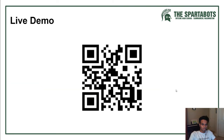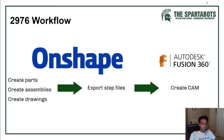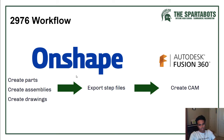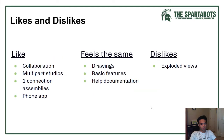Team 2976's workflow for Onshape is: we create the parts and assemblies in Onshape, create drawings in Onshape as well, then export the STEP files of individual parts into Fusion 360 where we create the CAM for them, and then run those CAM files on our CNC router. Pretty straightforward.